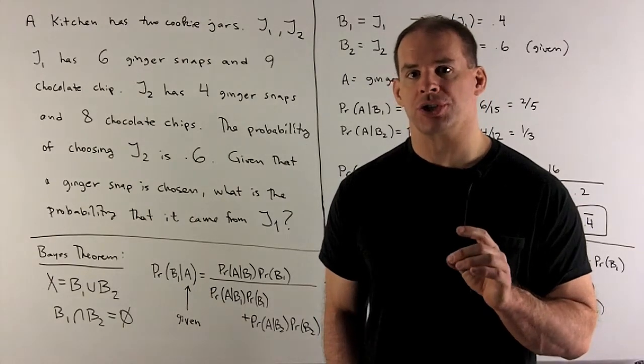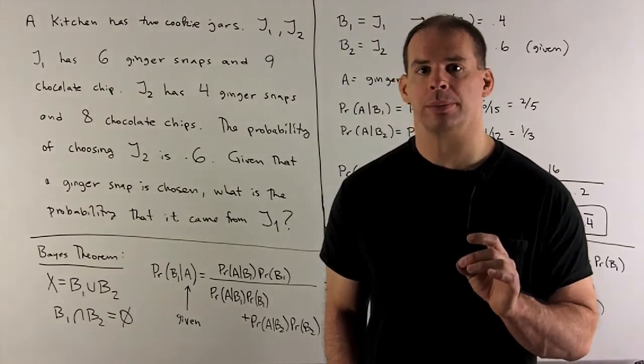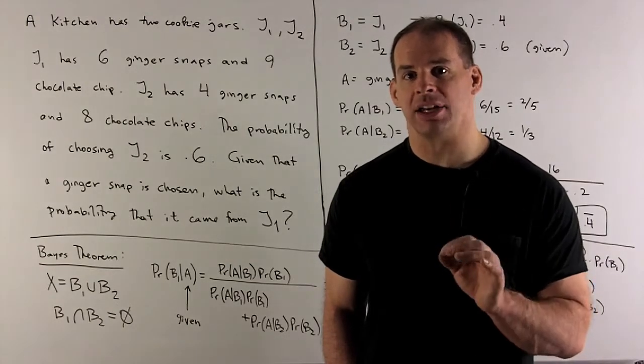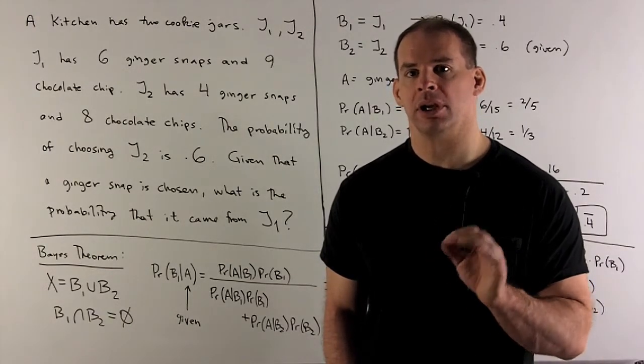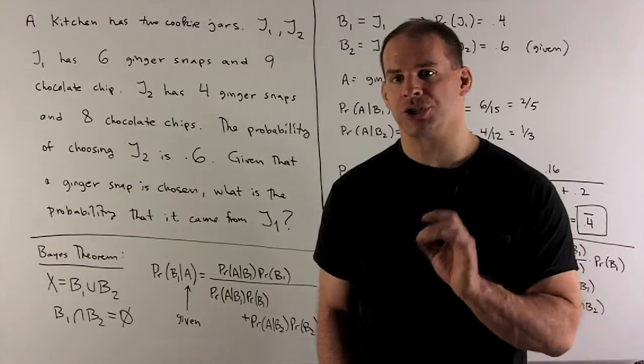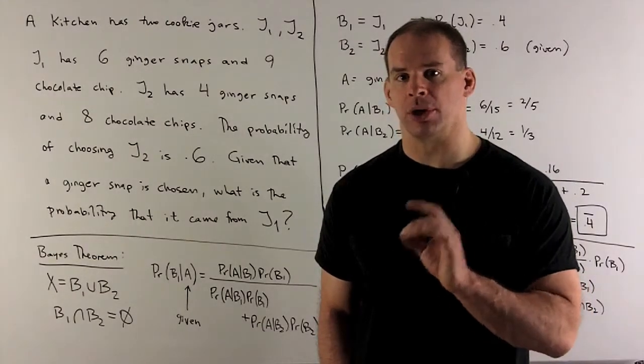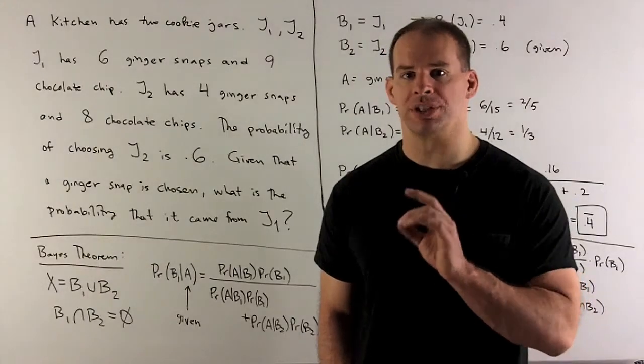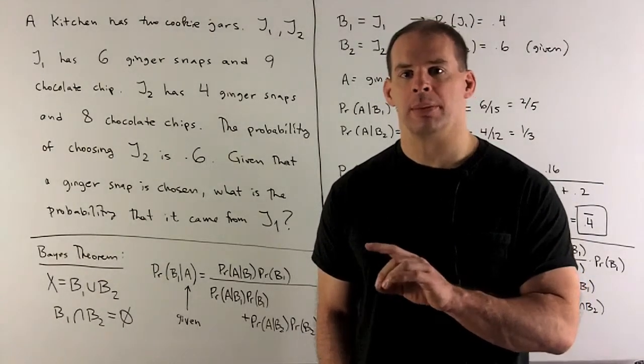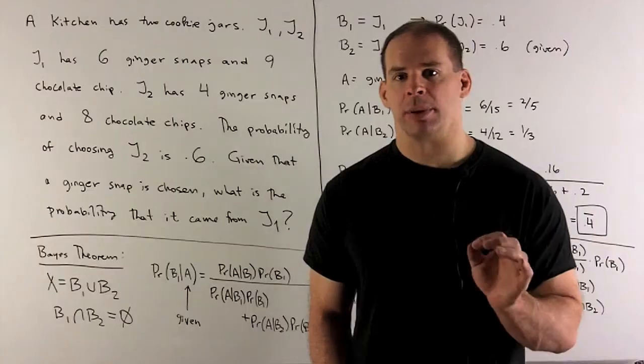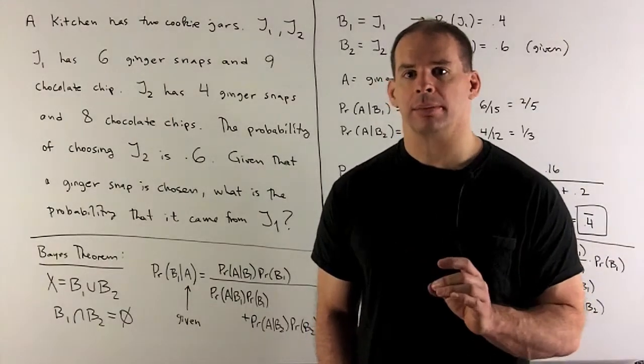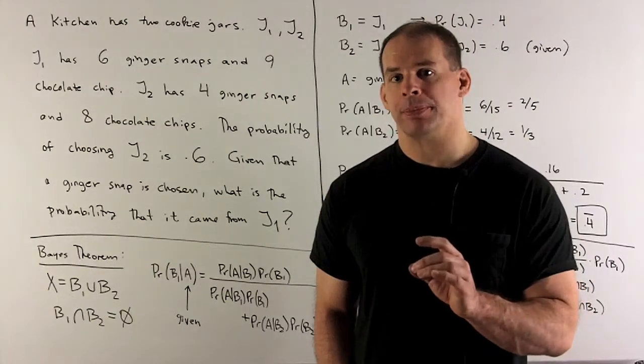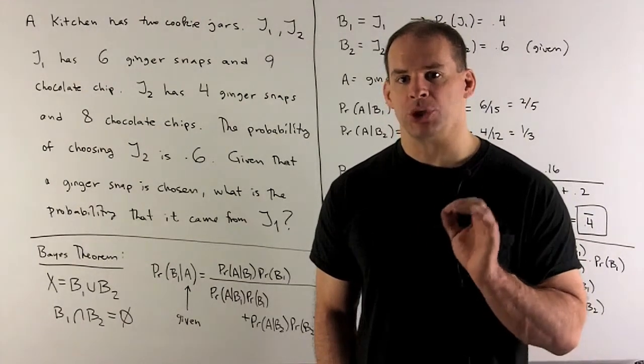A kitchen has two cookie jars, jar one and jar two. Jar one has six ginger snaps and nine chocolate chip cookies. Jar two has four ginger snaps and eight chocolate chip cookies. The probability of choosing jar two is 0.6. So it's midnight, I can't see what I'm doing, I grab a jar at random. Given that I picked a ginger snap, what's the probability that it came from jar one?